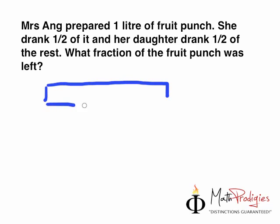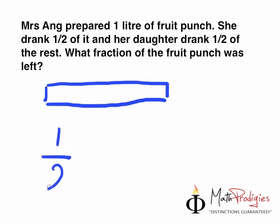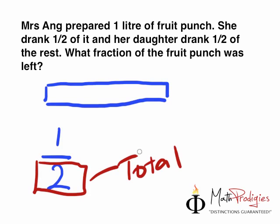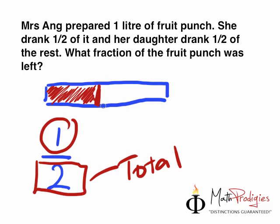So I'm going to draw for you a model — a very ugly model here, okay? It says, she drank half of it. So what do you do? When you see the number half, remember, I always teach you, the bottom number is the total number of parts, right? Which means there should be 2 parts here, but there's only 1. So what do we do? We divide it into 2. Mrs. Ang prepared 1 liter, she drank half — that means she drank 1 part. So you must shade the other side, and that means she drank this half. And how much is left? Another half is left.